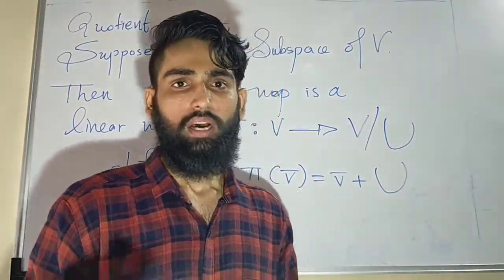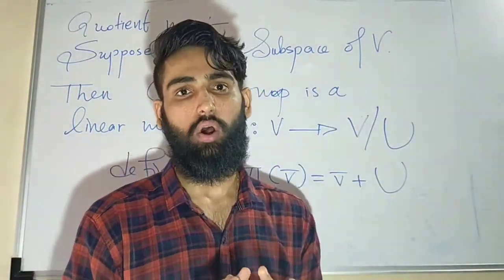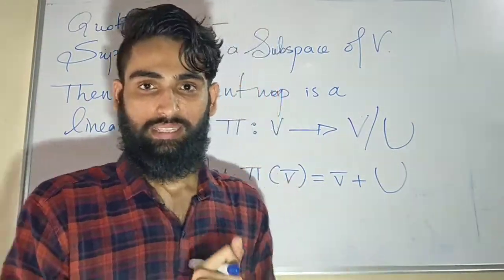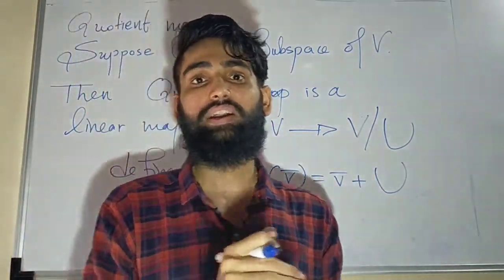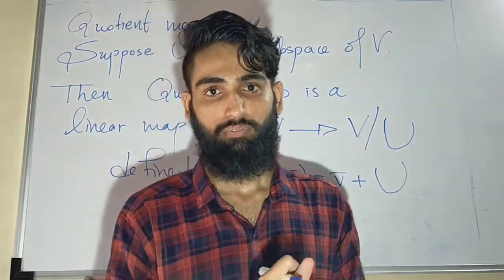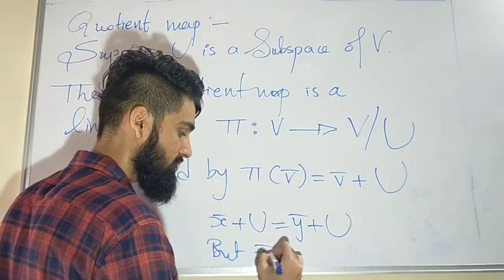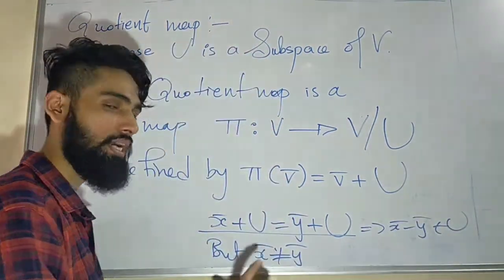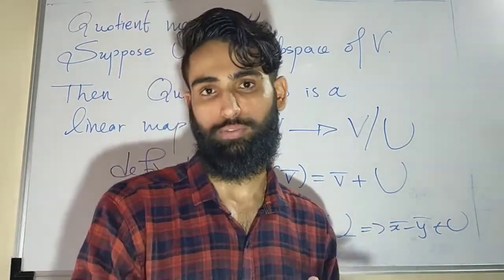A few things that we should note. This map is well defined because I just have to take the representative as v̄, so it is always going to give one single answer. But this map is not one-to-one — it is many-to-one, since there are many elements which can go to the same coset. Cosets have different representatives; the representative is not unique. We know that x̄ plus U can equal ȳ plus U, but x̄ is not the same as ȳ. So the map is well defined but it is not one-to-one.